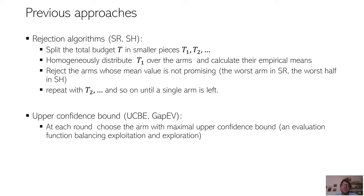And we use these new values, these new mean values, to get rid of the arms that are not promising. For example, in SR, at the end of the phase, we get rid of a single arm, the one with the worst mean value. Whereas SH is a little bit more aggressive. It halves the number of arms. And so this process continues until a single arm is left.